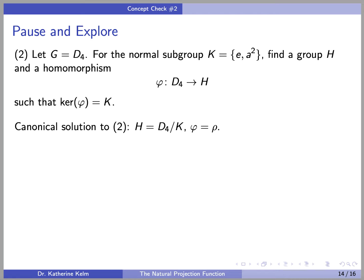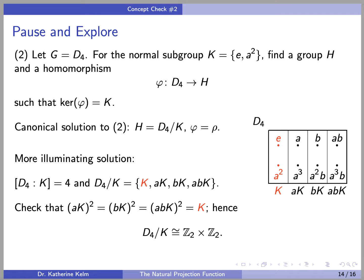The canonical solution is to take H equal to the quotient group D4 mod K, and take phi equal to the natural projection rho. By our previous results, this answers the question. But we can give a more illuminating solution by working with a more familiar group. What is D4 mod K up to isomorphism? K has index 4 in D4, and D4 mod K consists of the following four left cosets: K, AK, BK, and ABK, which slice up D4 into four left cosets.